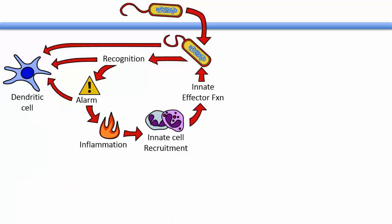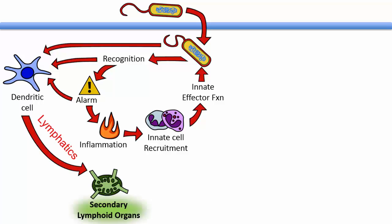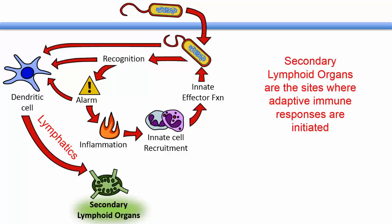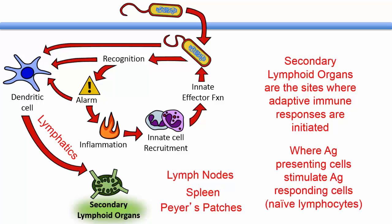Where do they go? Activated dendritic cells in most peripheral tissues or organs enter lymphatics and migrate to a secondary lymphoid organ, where most adaptive immune responses are initiated. These include lymph nodes, spleen, and Peyer's patches, and are the sites where antigen-presenting cells present antigen to the responding cells.